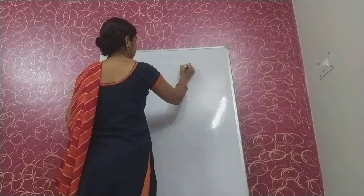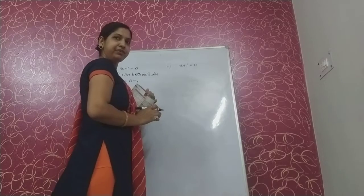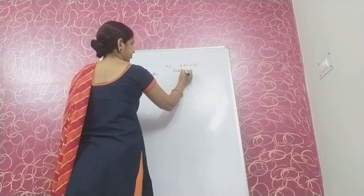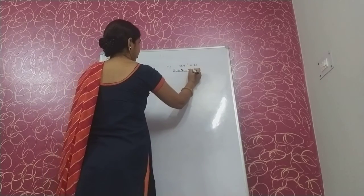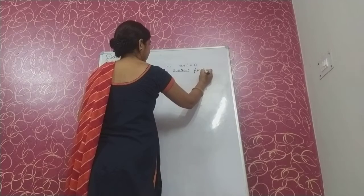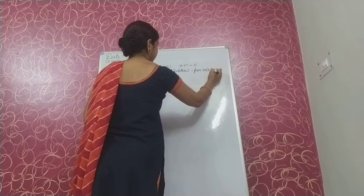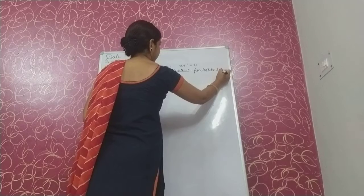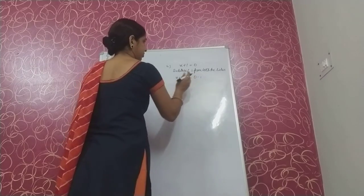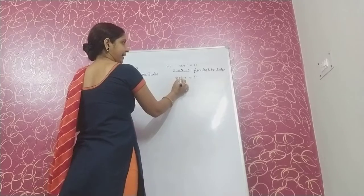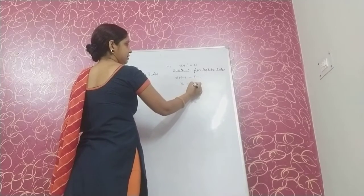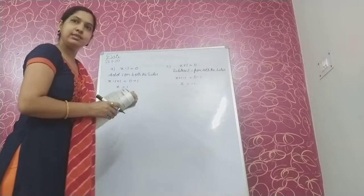Second, x plus 1 is equal to 0. Here, plus 1 is given with variable x so we will subtract 1 from both the sides. Plus 1 minus 1 becomes 0, so on the left side we have only x. And 0 minus 1 is minus 1. So the value of x is minus 1.